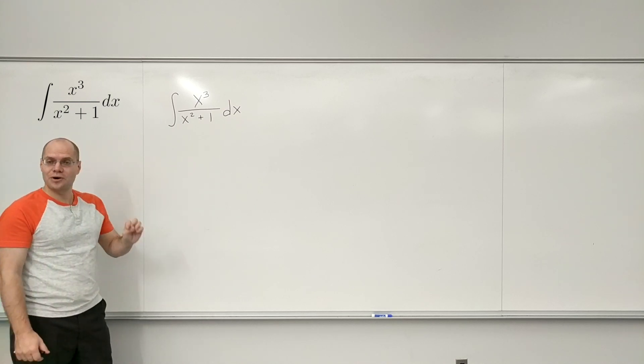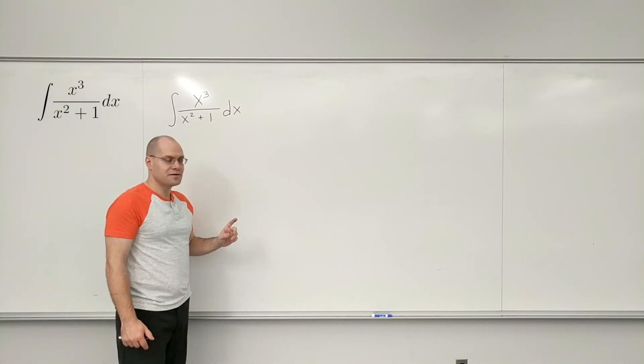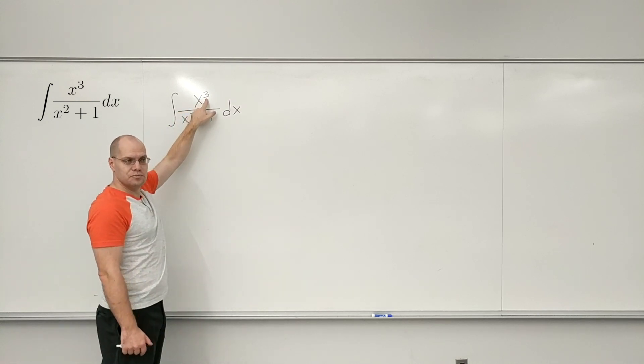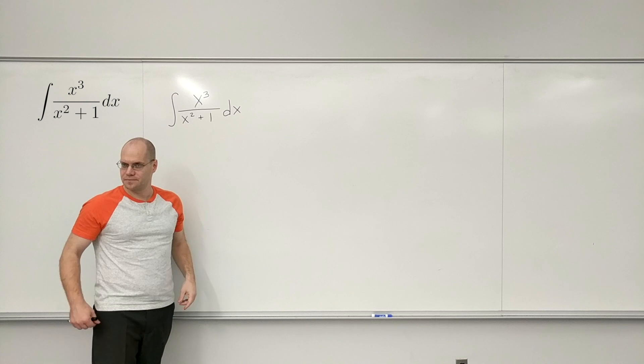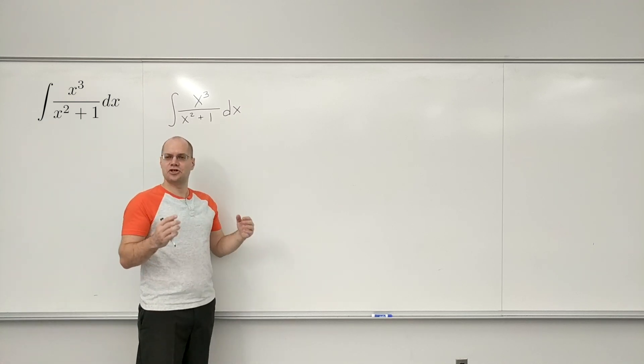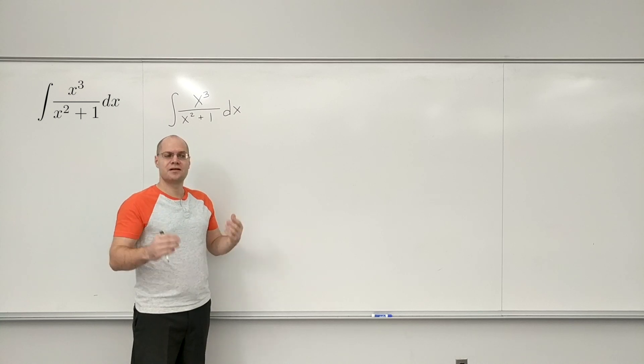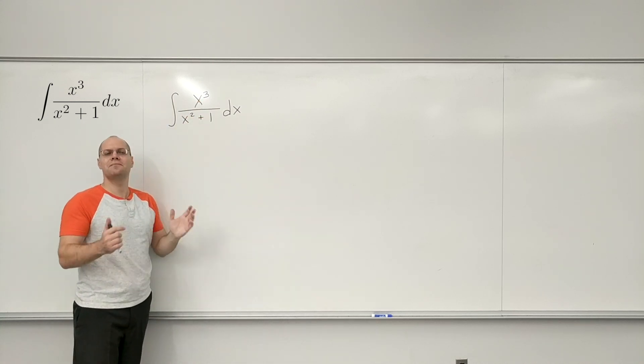Okay, so that required a little bit of ingenuity and a little bit of luck because it worked with x cubed, but it would not have worked with x to the fourth or any other power. So that's fine. That can happen. But now I will show you something much more robust that works for any polynomial in the numerator. Doesn't matter what it is.